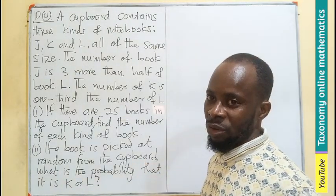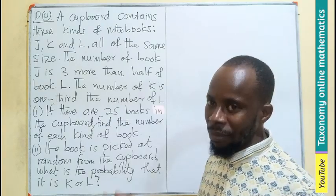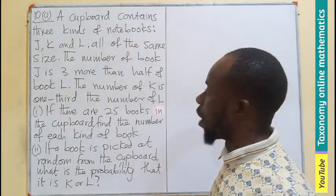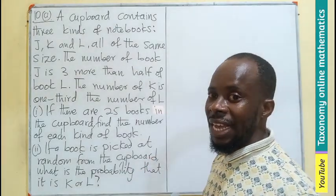Then we also need to find: if a book is picked at random from the cardboard, what is the probability that it will be either book K or book L? This is the word problem we'll be working through.